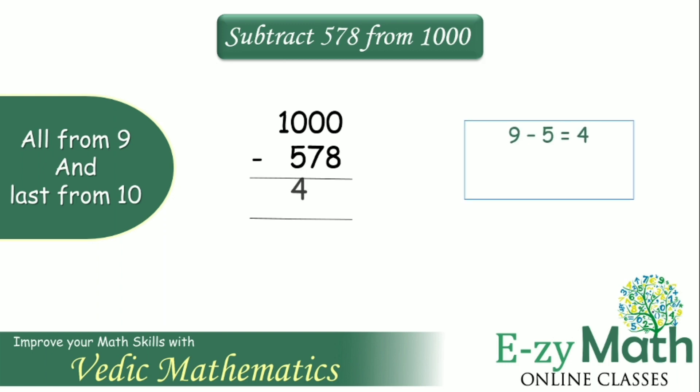9 minus 5 gives us 4. 9 minus 7 gives us 2. And the last from 10, that means 10 minus 8 gives us 2. Therefore, the answer we get is 422.